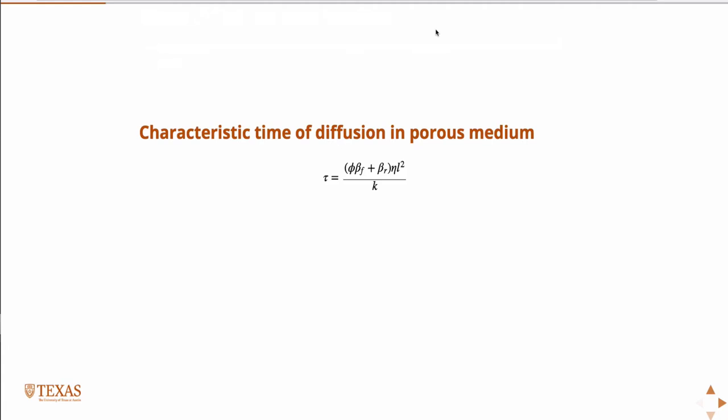We have a characteristic time of diffusion in a porous medium. To understand where this equation comes from: this is a characteristic time, tau, and some characteristic length L. The characteristic time is for fluid to diffuse over some characteristic length L. Just like in mechanics you start with F equals ma, if you're solving a reservoir fluids problem a good place to start is Darcy's law.